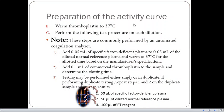Now coming to point B of the preparation of the activity curve. First we have to warm the thromboplastin to 37 degrees Celsius. And then perform the following test procedure on each dilution. As I mentioned earlier, this kind of step is performed usually in automated coagulation analyzer. What happens is that we add 0.05 ml of the specific factor deficient plasma to 0.05 ml of the diluted normal reference plasma.